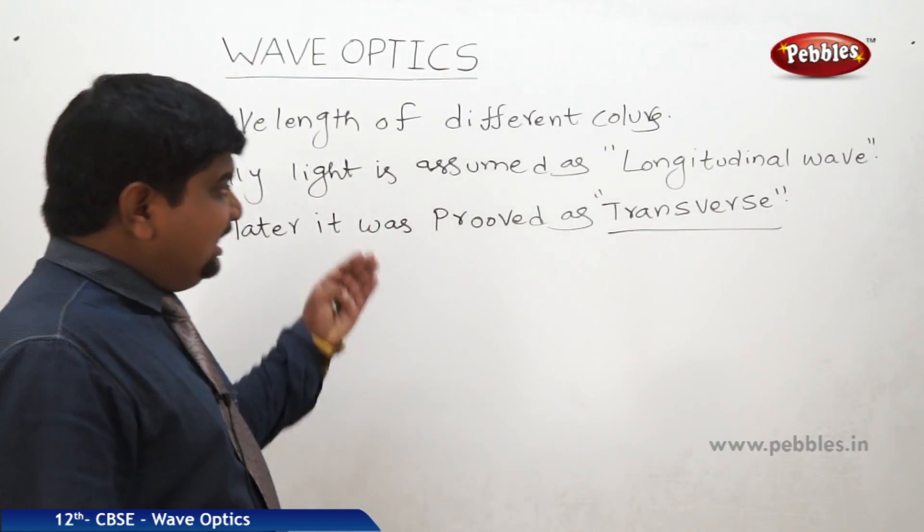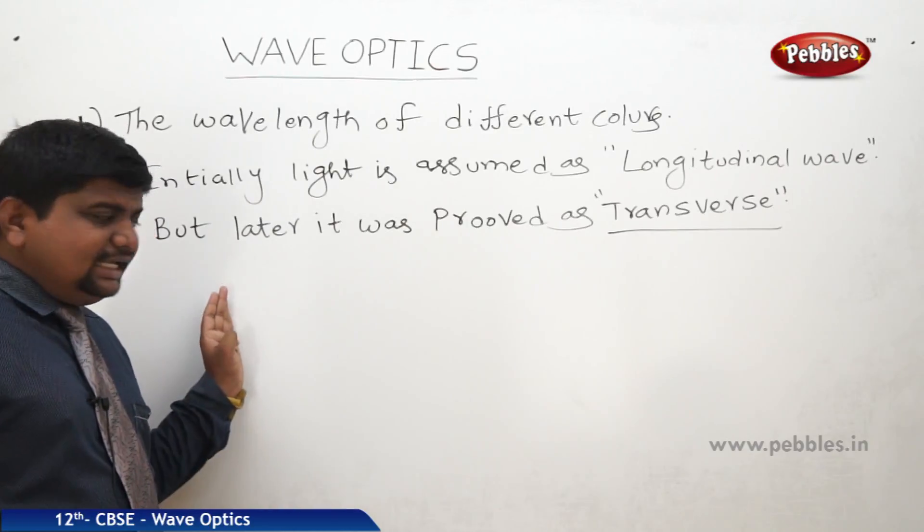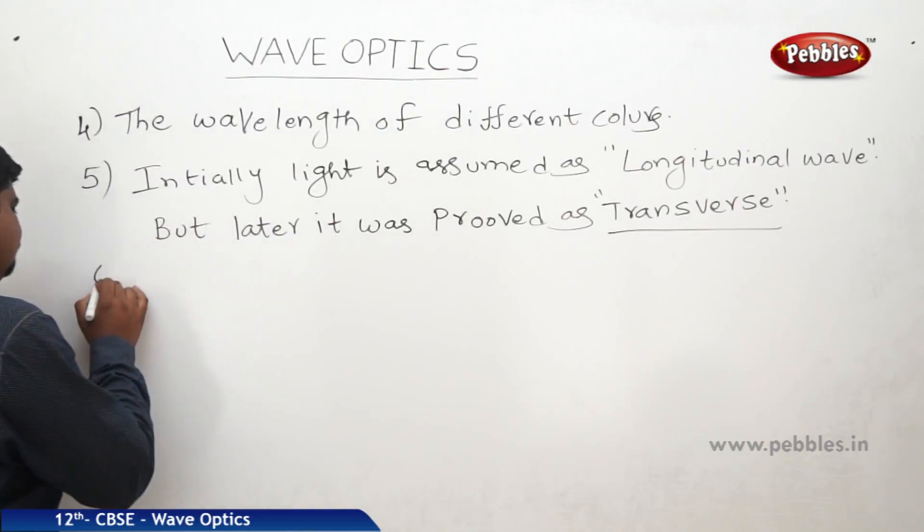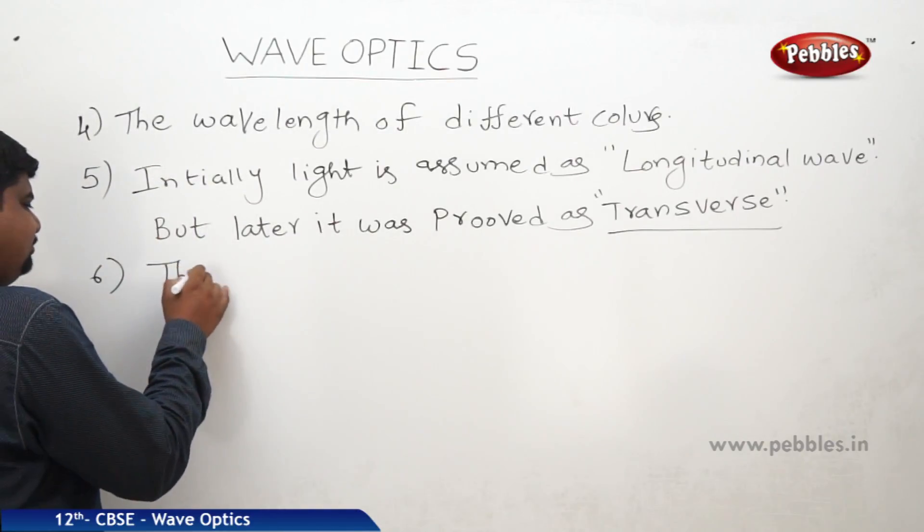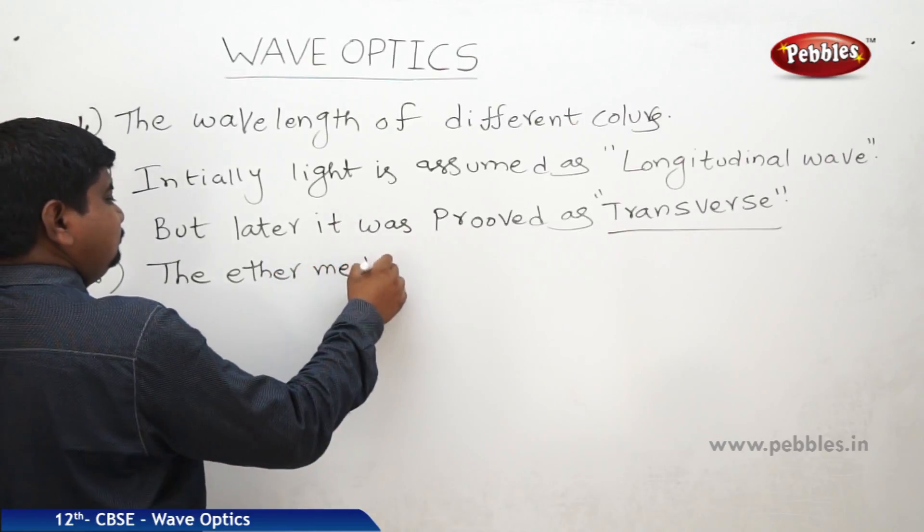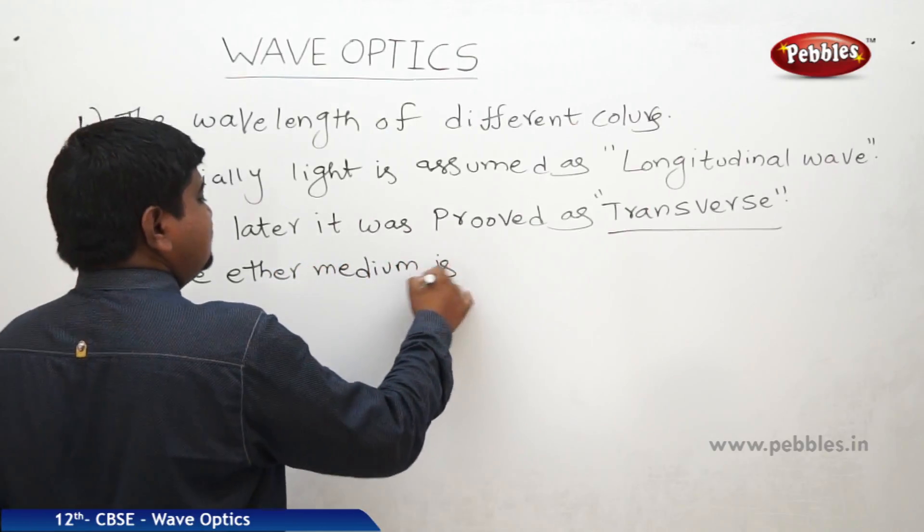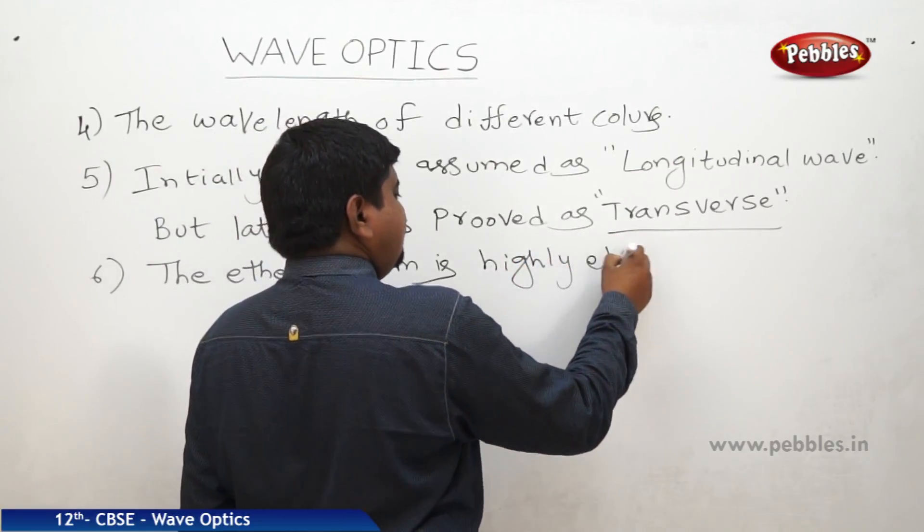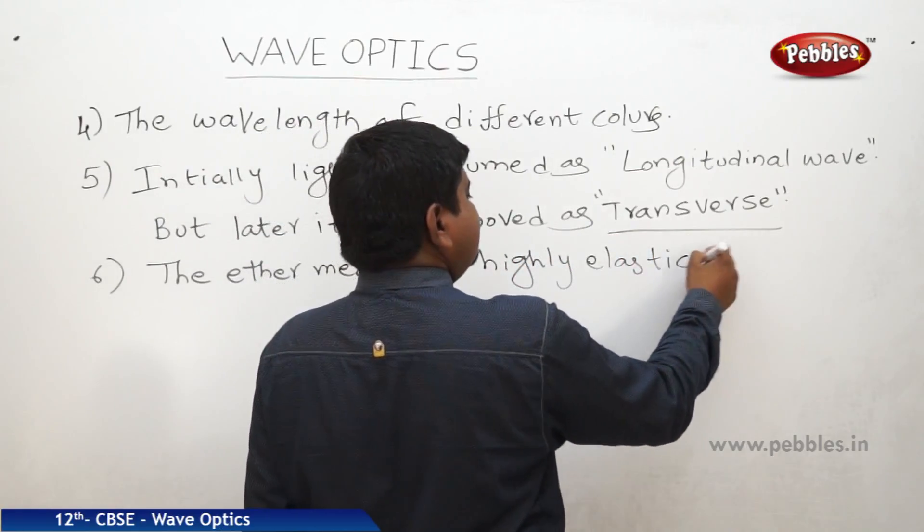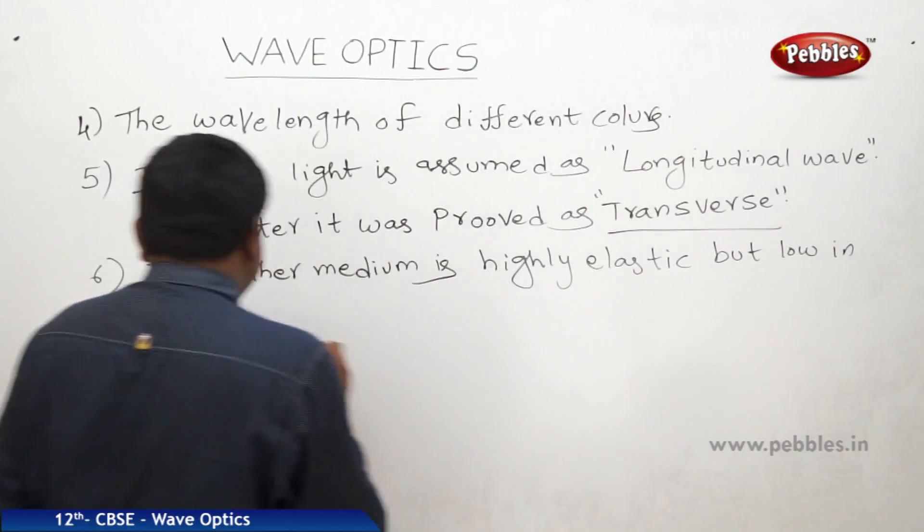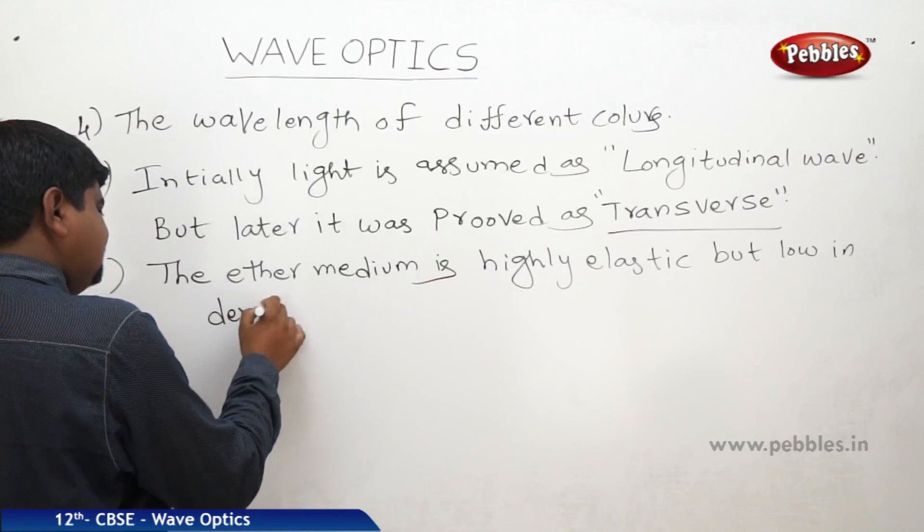The medium, the medium what he assumed, ether, is highly elastic but low density. The ether medium is highly elastic but low in density or less in density.